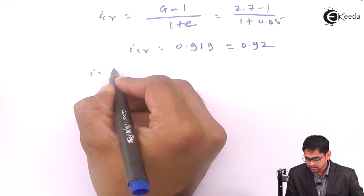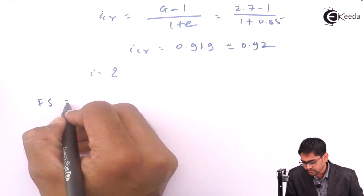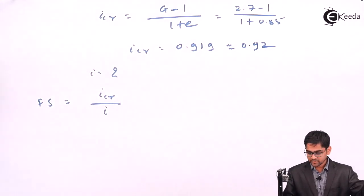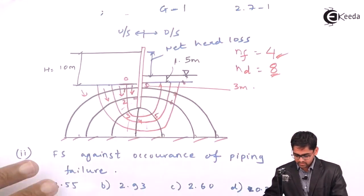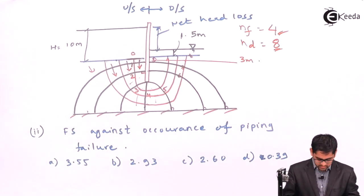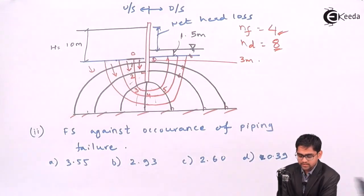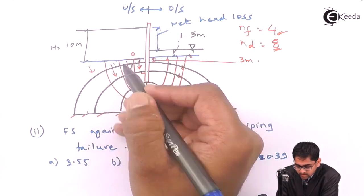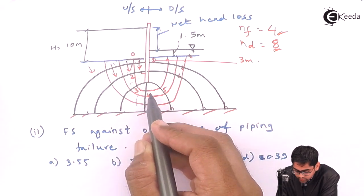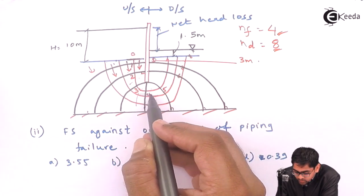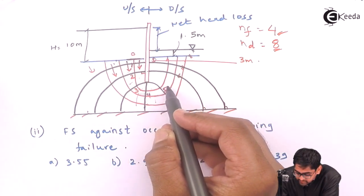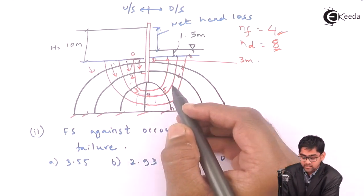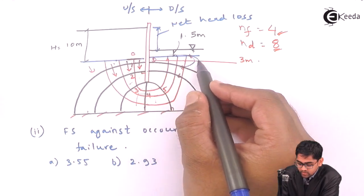The factor of safety against piping failure is i critical divided by i actual happening. If you have looked towards this diagram, piping will not occur here, not here. Here flow is obviously horizontal, no piping. But from 5, 6 and 7, there are chances of piping increases. Piping is most likely to be offered within this zone.